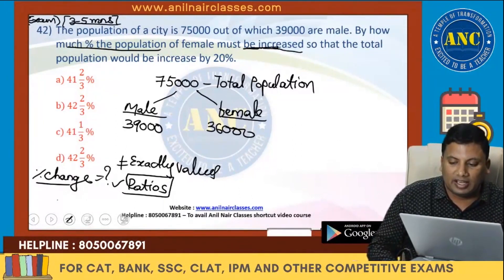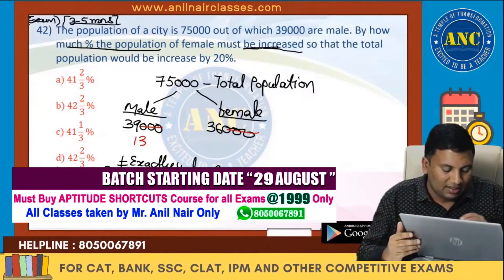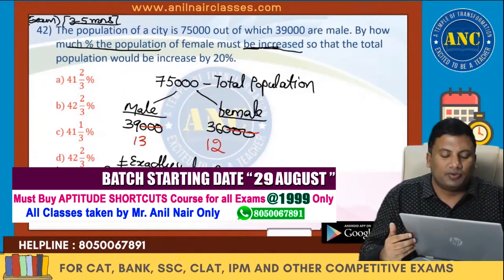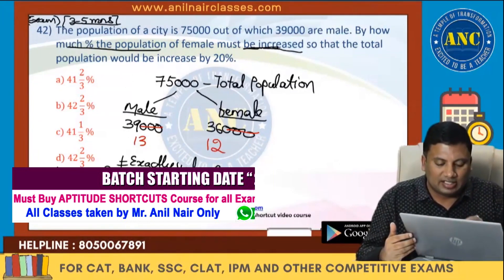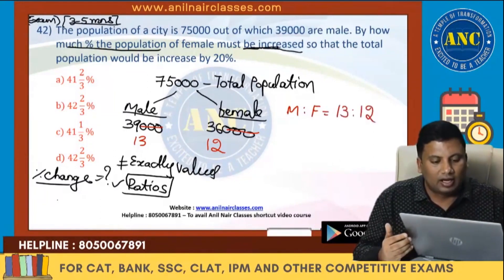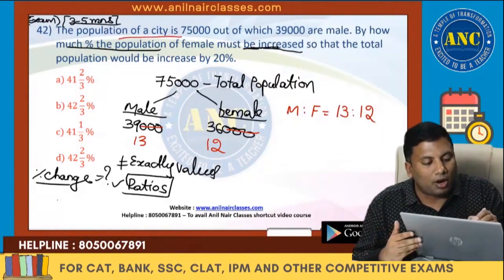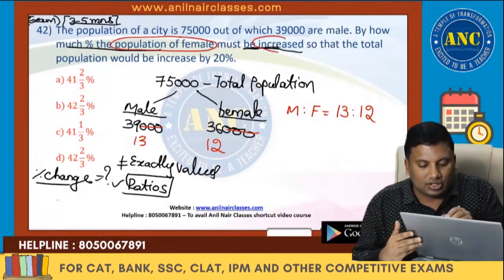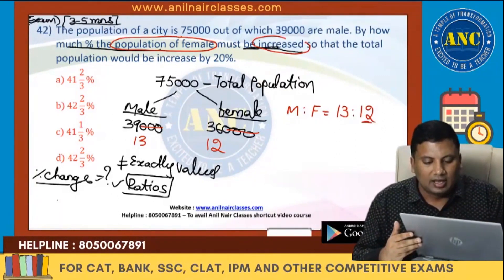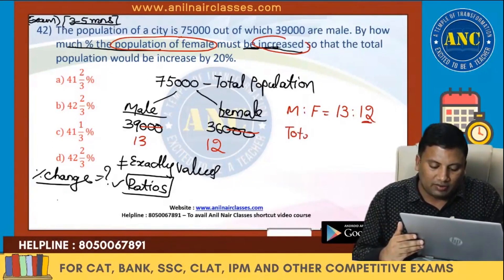All I need is a ratio. Now listen carefully: the three zeros cancel. 3×13 = 39 and 3×12 = 36, so male to female is in the ratio 13:12. By how much percentage must the population of females be increased so that the total population increases by 20 percent?